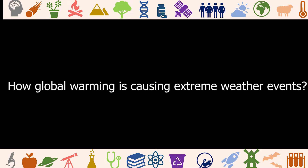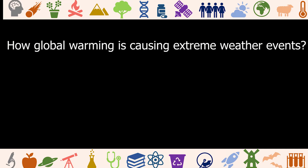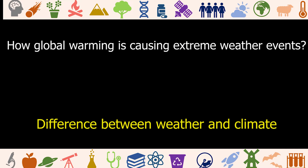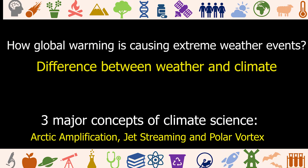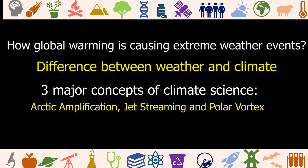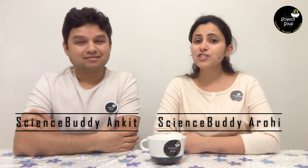In this video we'll be discussing how global warming is causing extreme weather events across the world. We'll be talking about the difference between weather and climate, and give some simple explanations of three major concepts of climate science: arctic amplification, jet streaming, and polar vortex. Towards the end of the video we'll be doing a very simple experiment to understand the concept of polar vortex. Hello and welcome back to Sciencey Soup — we are your science buddies, I'm Arohi and I'm Ankit.